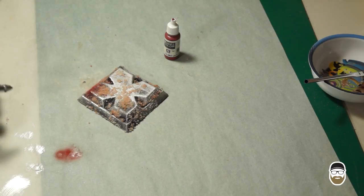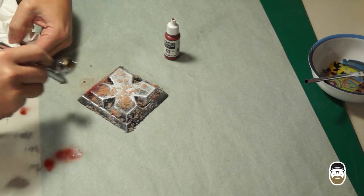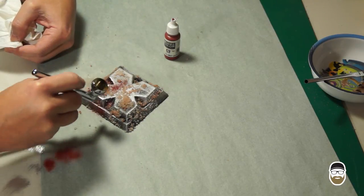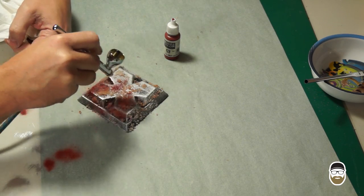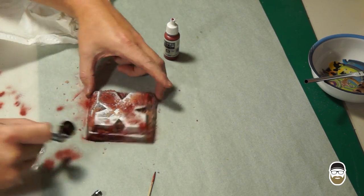Load up some cavalry brown into the airbrush and paint some areas of the surface. Cover more ground with this color since it will be covered up by other colors.